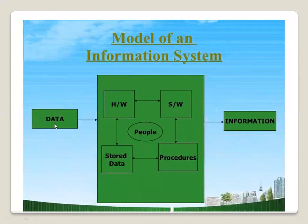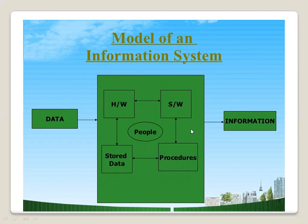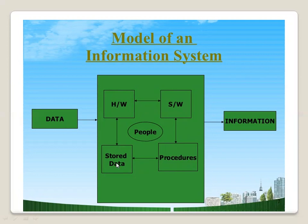This is the model of data flow: data in raw form is put into the hardware system, then it is implemented to the software system, the software procedure is done, and the data is stored. Vice versa, the stored data can be given back to you in the form of information. The arrows in this diagram show how data goes through the process and is collected into information.